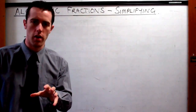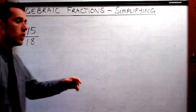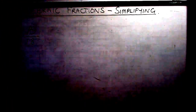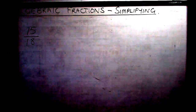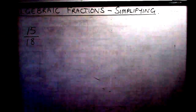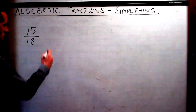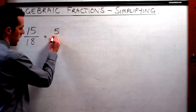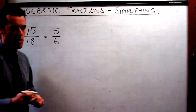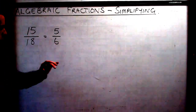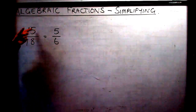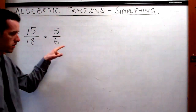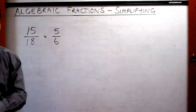We're going to simplify algebraic fractions, so I thought we'd start by looking at how we simplify regular fractions with just regular numbers. We've got 15 over 18, and we should all know that this simplifies to 5 sixths. We would think about it as: you can divide both 15 and 18 by 3. 15 divided by 3 is 5 and 18 divided by 3 is 6, so we get 5 sixths.